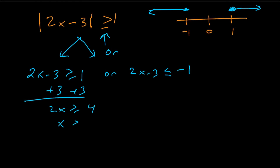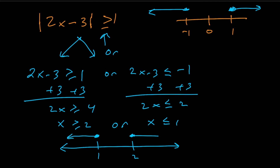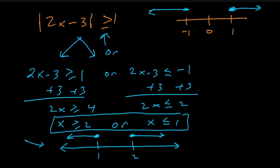Then we solve each separately — add 3 to both sides, divide by 2 — giving us x is greater than or equal to 2, or x is less than or equal to 1. When graphing, put numbers in order from lowest to highest: x is less than or equal to 1 or x is greater than or equal to 2. You can write it algebraically or show it graphically on the number line. It's a set of solutions, not just one answer.